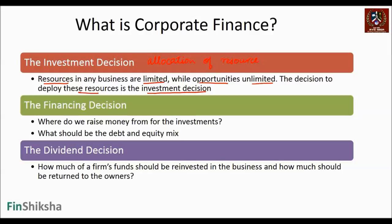The next question is: where do we raise money from for all these investments? In other words, what should be the optimal debt and equity mix? The mix of debt and equity that maximizes the objective function we have in corporate finance — that decision falls under what is called the financing decision.